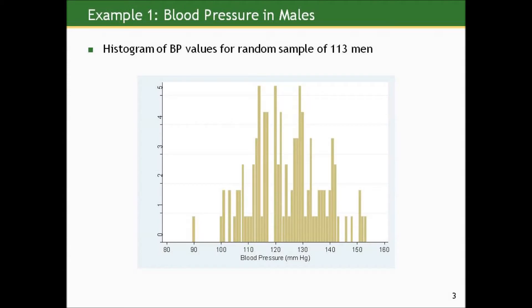For example, here is that histogram of blood pressure values for a random sample of 113 men that we looked at previously. The bin width is 1 mmHg, which we said was a little bit too fine for this data, but I'm going to do this just so we can compare it to some other pictures with the same setting.